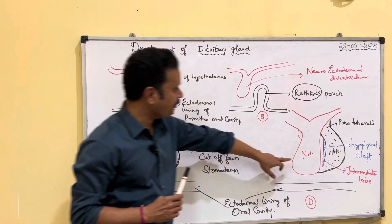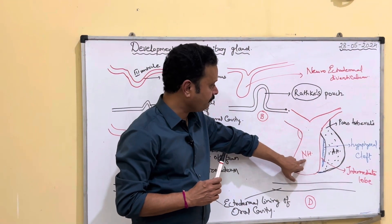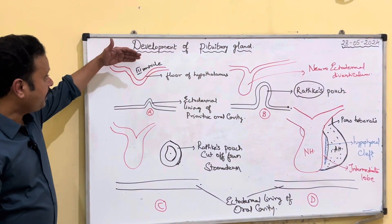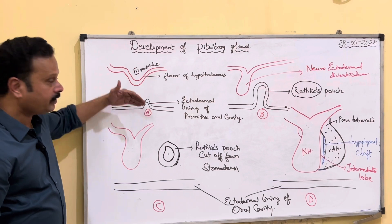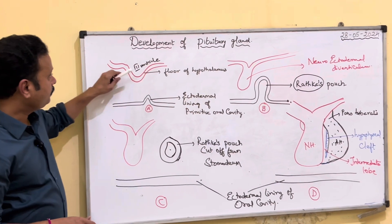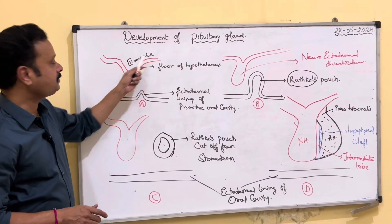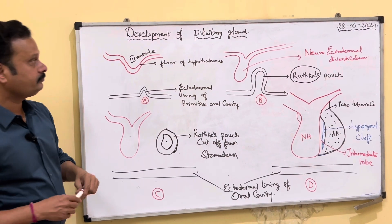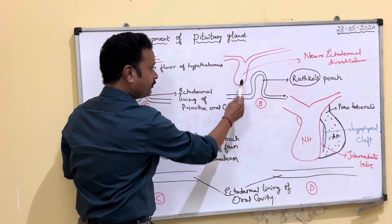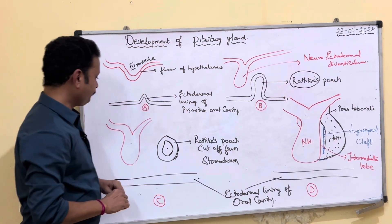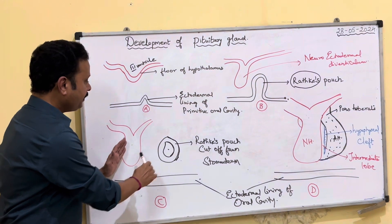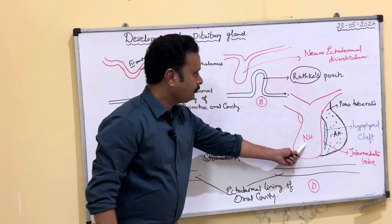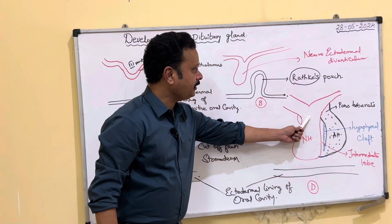Coming to the development of the neurohypophysis — the posterior lobe is developed from the evagination of neuroectoderm from the floor of the hypothalamus or from the third ventricle. This evagination of neuroectoderm grows and eventually gives rise to the posterior lobe and the infundibular stalk.